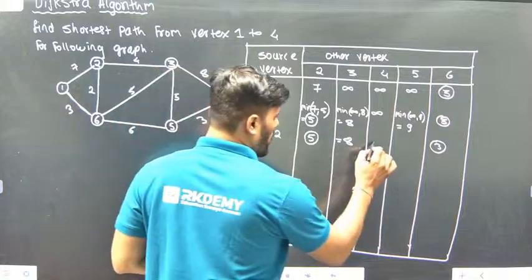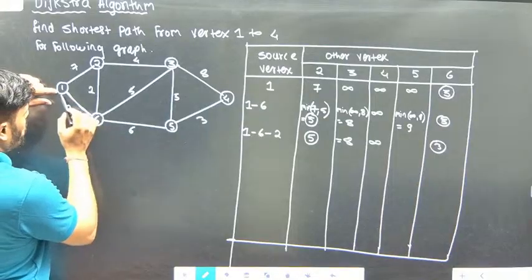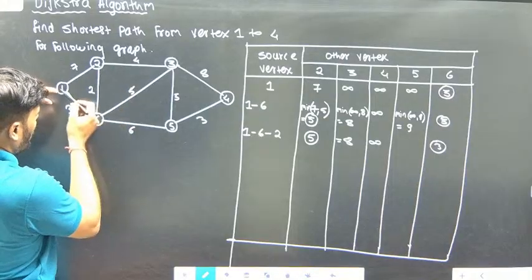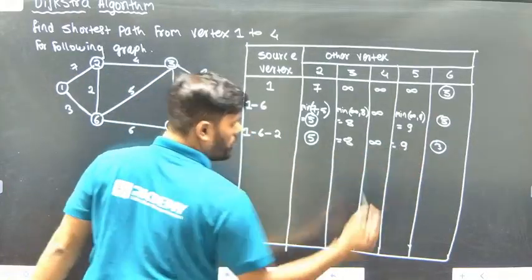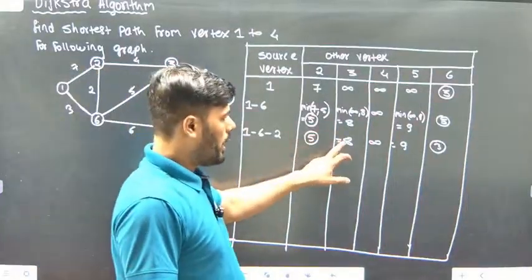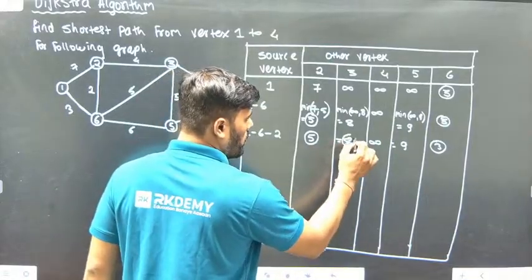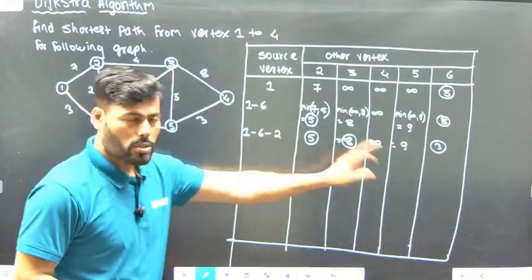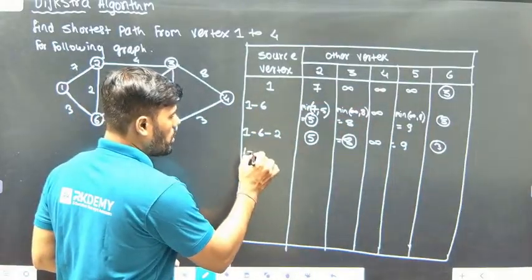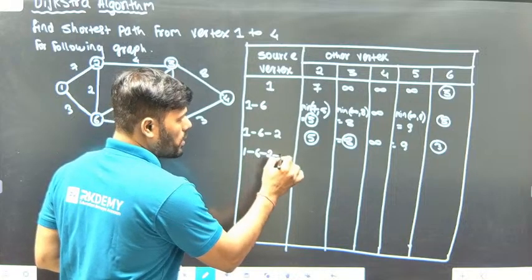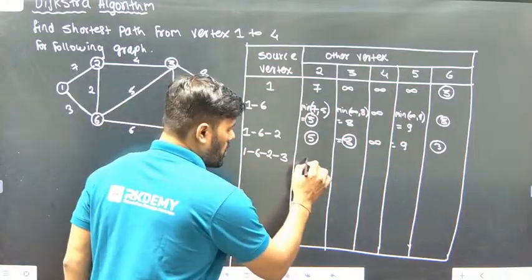Next, for vertex 5: to go to vertex 5, via vertex 2 is not directly possible — we have to go via vertex 6. Now, the options available are 8, infinite, and 9. So the minimum is 8. Vertex 3 is the next to relax. Vertex 1 is already done, vertex 2 is done — this is the shortest distance so far.